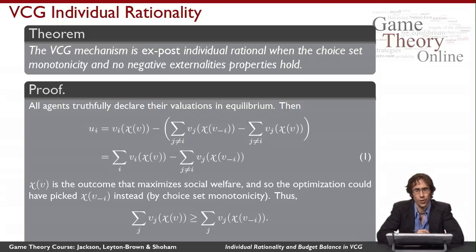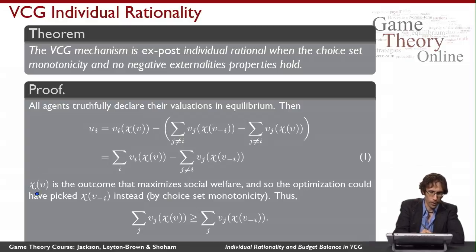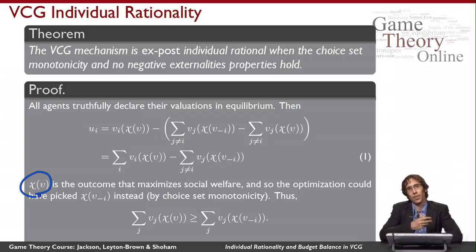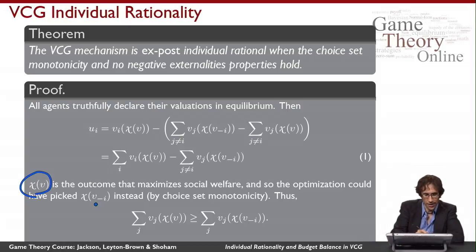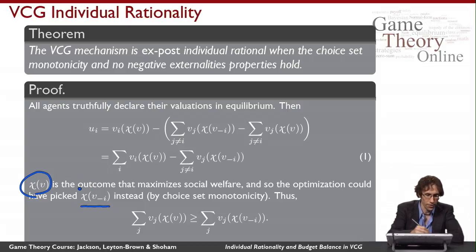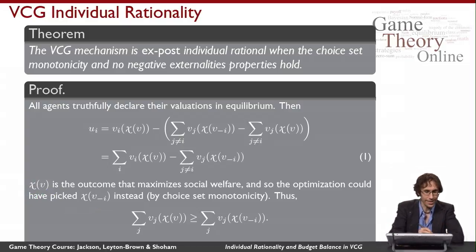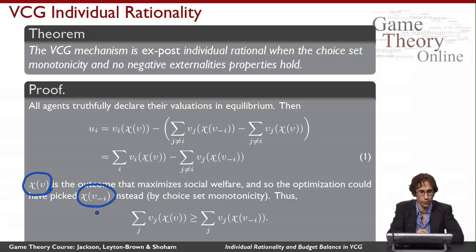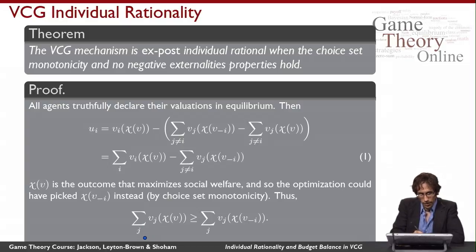Now comes the part where we use choice set monotonicity. The expression X(V) is the outcome VCG chose, which maximizes social welfare. By choice set monotonicity, the outcome X(V_{-i}) was also one of the available choices when we picked X(V) instead. So there must have been at least as much social welfare under X(V) as under X(V_{-i}) — if not, the optimization would have just picked X(V_{-i}). Writing that as an equation: the sum of agents' values for X(V) is at least as big as the sum of agents' values for X(V_{-i}).